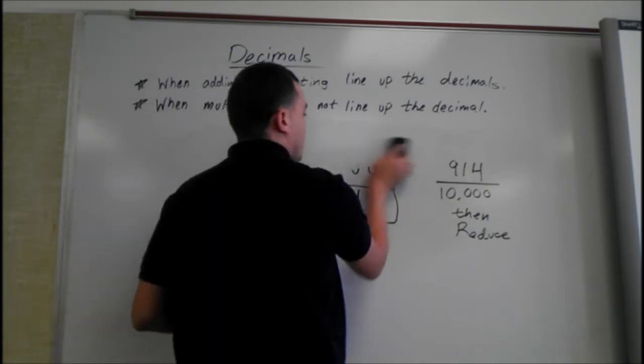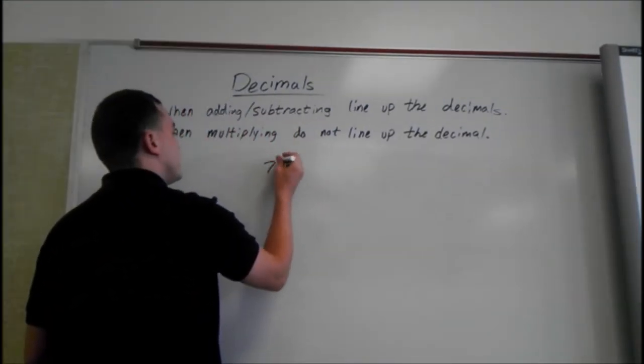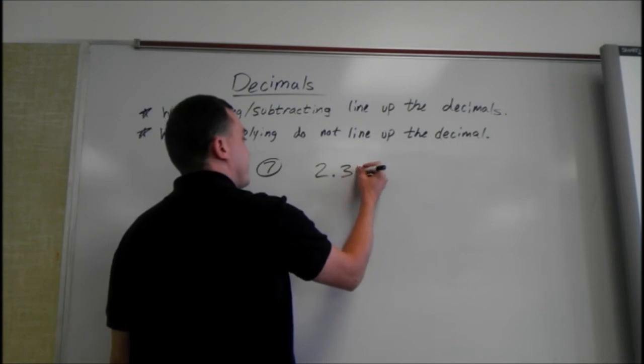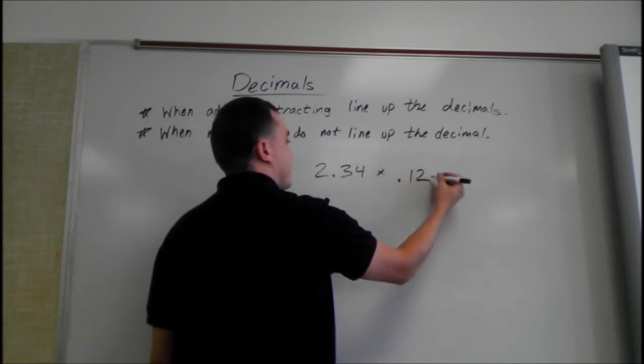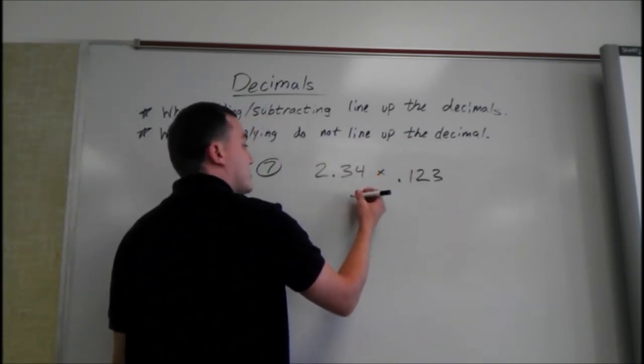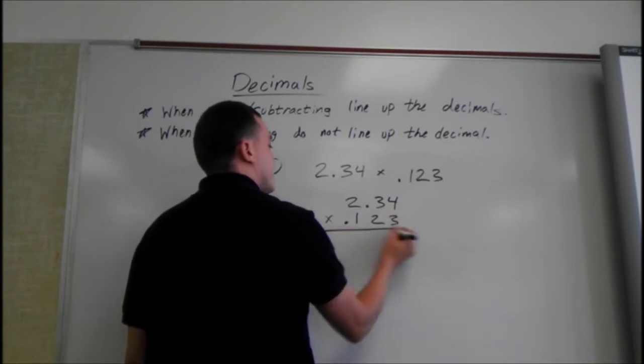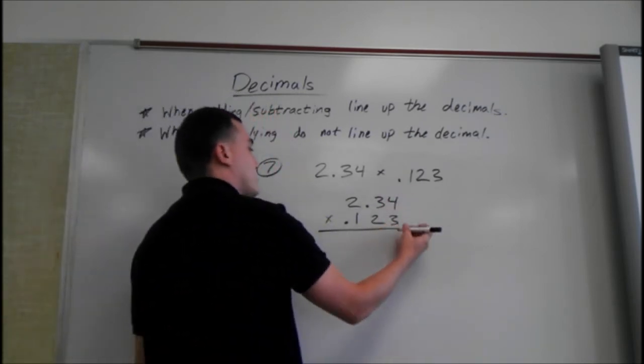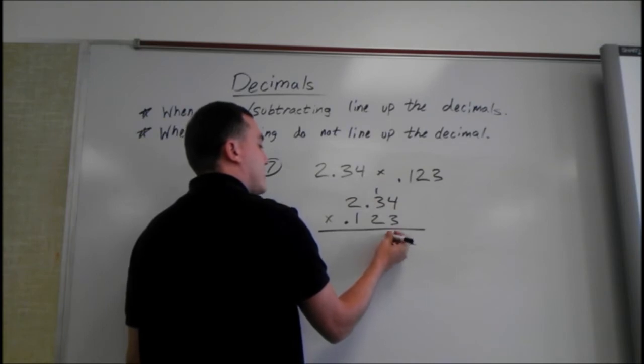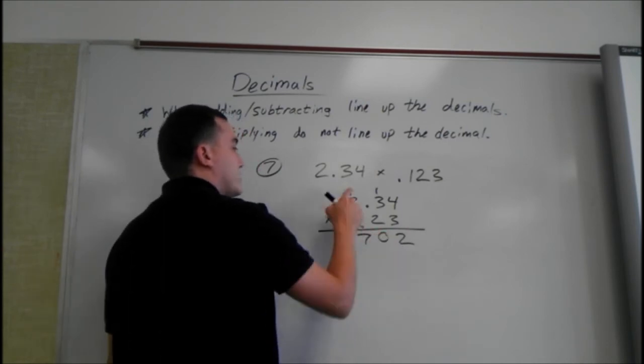Now we're going to multiply two decimals. I'm going to do a multiplying problem. We'll start out with 2.34 times 0.123. Line it up like you would when multiplying, but you don't have to line up the decimals this time. Multiply like you usually would. 3 times 4 is 12, 1 goes up here. 3 times 3 is 9, 9 plus 1 is 10. 3 times 2 is 6 plus 1 is 7. We're not going to deal with the decimals yet.